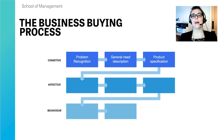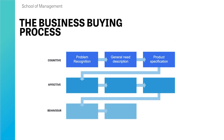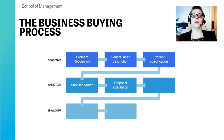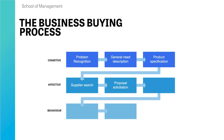The organization will recognize a problem, generate a need description, and create a product specification. This specification allows suppliers to assess whether their products fit the company's needs. The organization then carries out a supplier search, finding prospective suppliers and inviting them to bid. For example, Network Rail might create a specification for new sleepers or tunnel infrastructure and invite capable suppliers to submit a bid — a very time-consuming process that consumes significant resources.